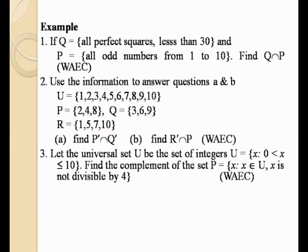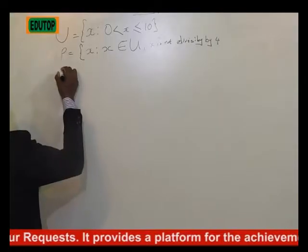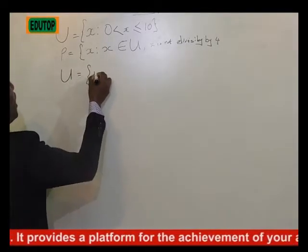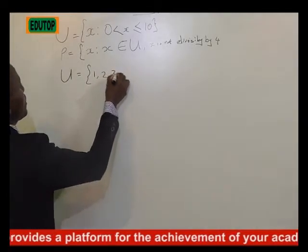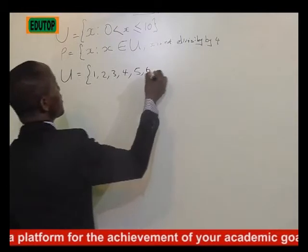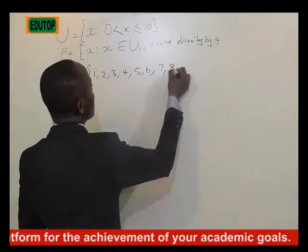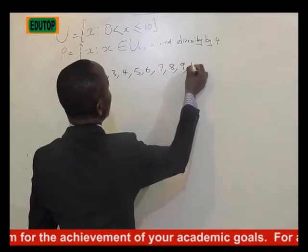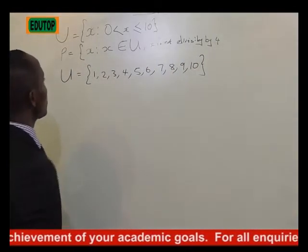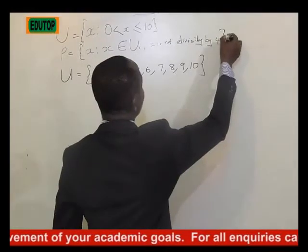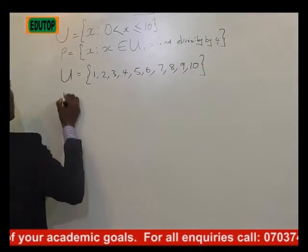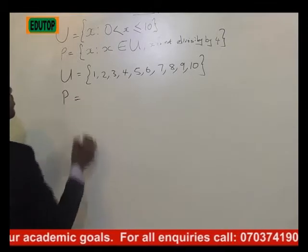For set P, our universal set is equal to 1, 2, 3, 4, 5, 6, 7, 8, 9, and 10. The equal to sign gives us that 10 is inclusive.